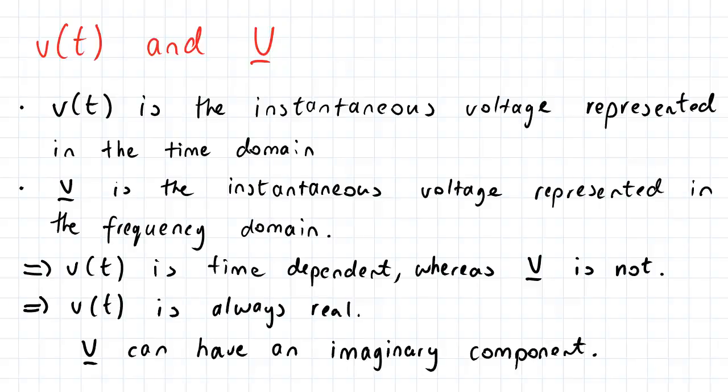So V of t is the instantaneous voltage represented in the time domain, hence it is a function of time, whereas V as a vector is the instantaneous voltage represented in the frequency domain. Furthermore, V of t is a time dependent variable, a time dependent equation, whereas V vector is not.